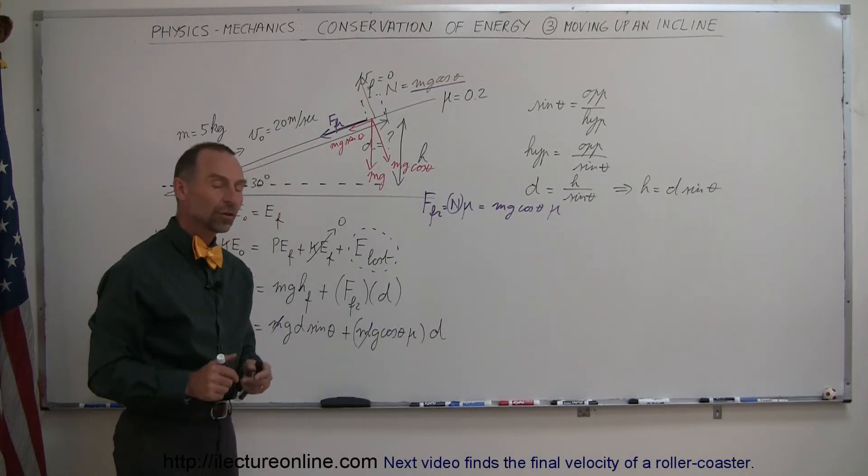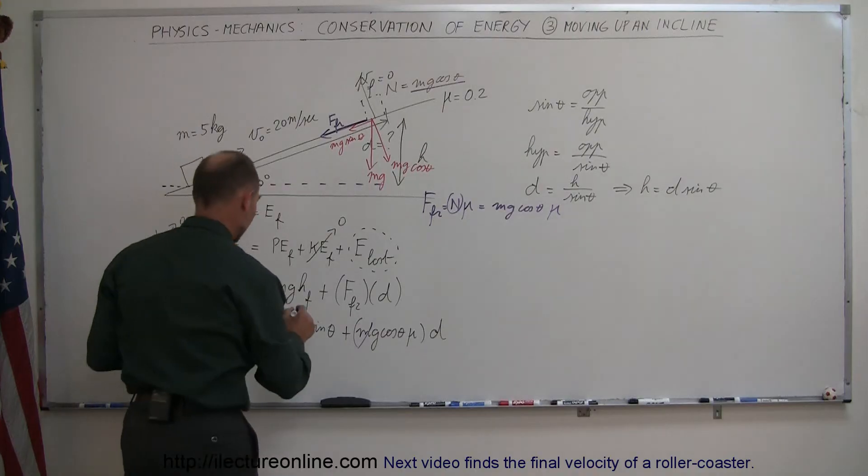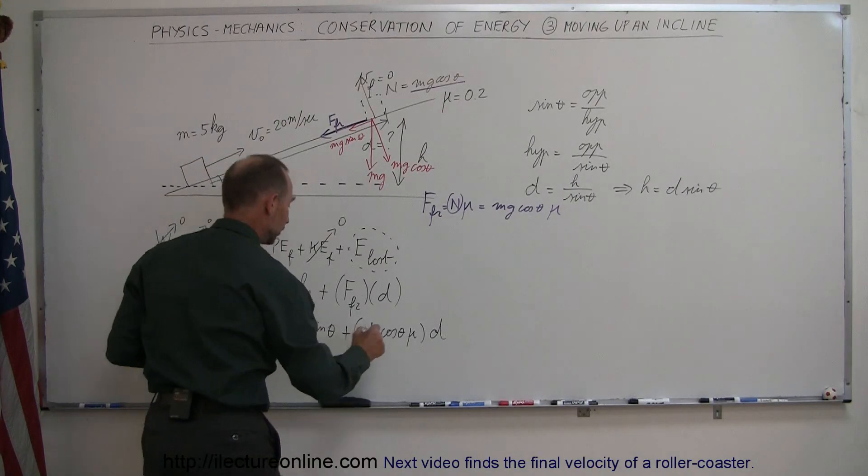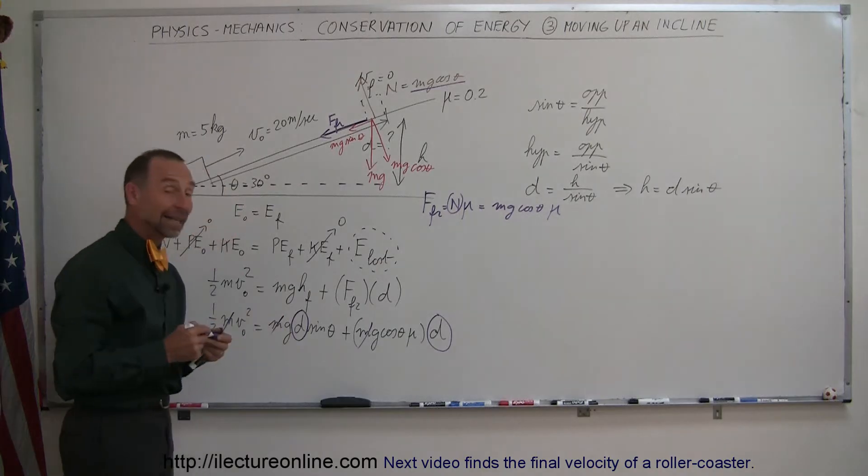We know mu. And we look for D. So the only variable left in there that is not known is the variable D. The displacement or the distance traveled by the object.